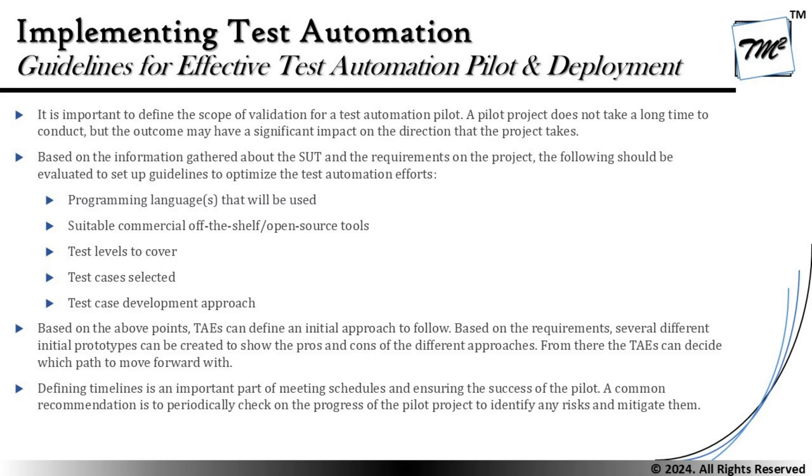We are trying to understand the guidelines which can be applied for effective test automation pilots and deployment. So far in the past three chapters we went step by step: we first understood the benefits and risks involved in using automation, then how to prepare to implement test automation, then the test automation solution, architecture, various components, scripting methods. Now it's time to roll it out, but we should understand what factors to take into account while rolling out this tool for the first time, which the team has probably never experienced before.